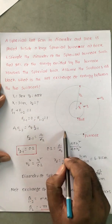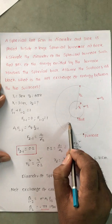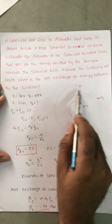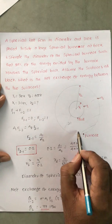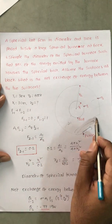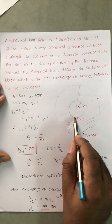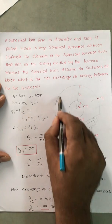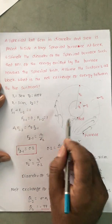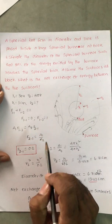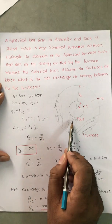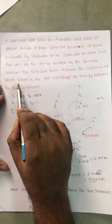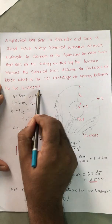This furnace is at a high temperature, so it emits radiation, out of which only 20% is striking the small ball and the remaining 80% is striking the furnace surface itself. Assume the surfaces as black. What is the net exchange of energy between the two surfaces?